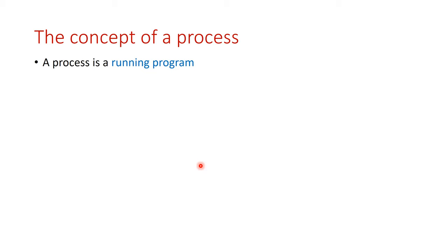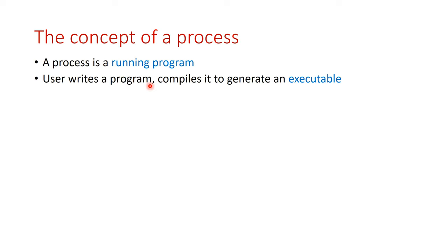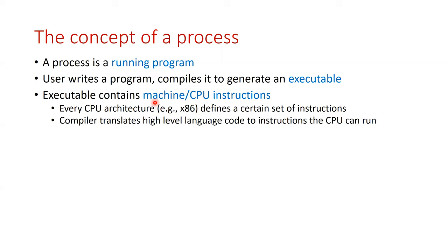Let us begin with the concept of a process. A process is nothing but a running program. Users typically write programs — C, C++ programs, or any applications like a browser or an email client. All of these are programs which are compiled and an executable is generated. This executable contains a sequence of CPU instructions. For example, the x86 architecture defines instructions like add, move, and so on. A compiler translates high-level language code into a sequence of CPU instructions.